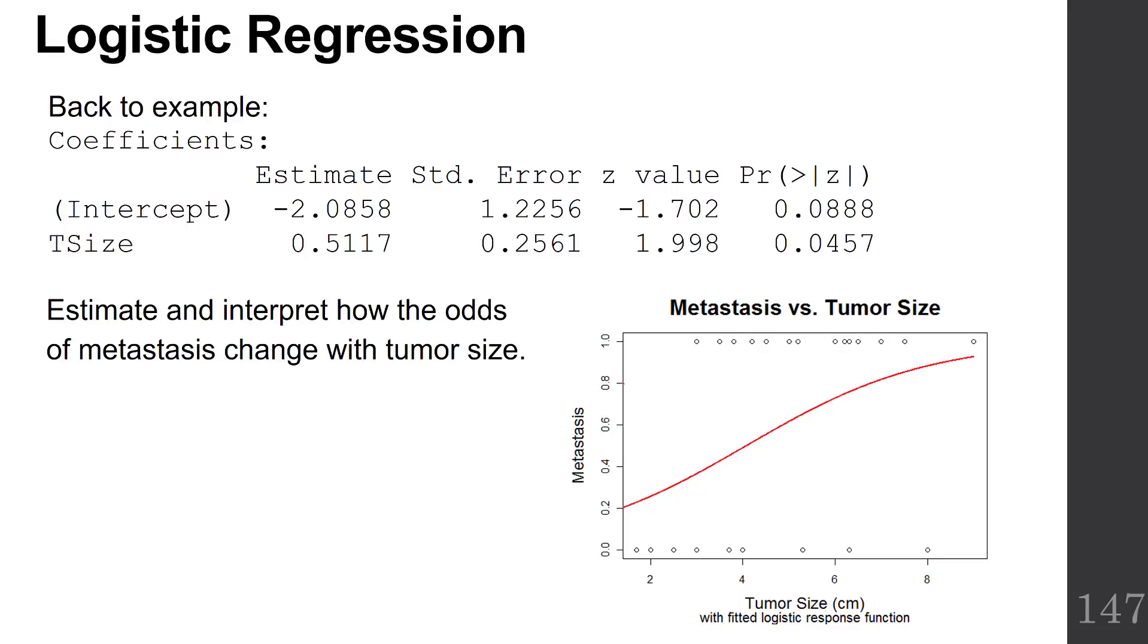Now we want to estimate and interpret how the odds of metastasis change with tumor size. Remember, that was our last formula that we derived in our box set of formulas. That was e to the beta 1. And so for our sample, we'll use e to the B1. So e to the B1 is e to the 0.5117, and that gives us 1.67.